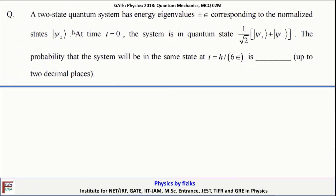A two-state quantum system has energy eigenvalues plus and minus epsilon, corresponding to normalized states ψ₊ and ψ₋. At T equals zero, the system is in a quantum state, and we have to determine the probability that the system will be in the same state at T equals ħ/(6ε).